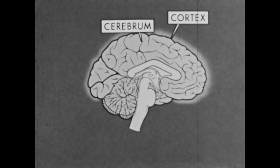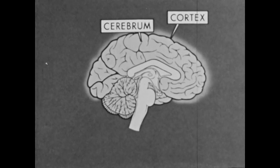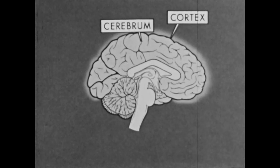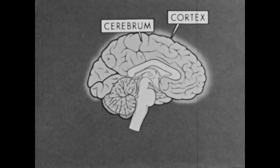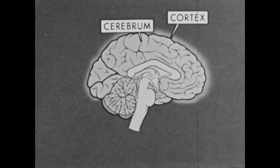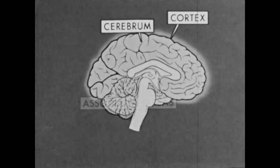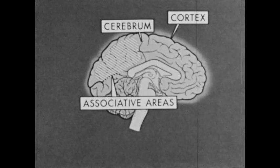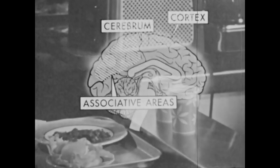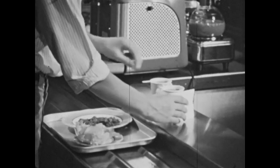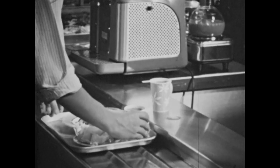This action began in the cortex and cerebrum — that portion of the brain which enables you to perform many activities, among which the most important is thinking and understanding. How the cortex of the brain thinks and understands is a mystery that has yet to be solved. We do know, however, that neurons in certain areas of the cortex, called associative areas, store a vast number of stimuli impulses. These areas of the cortex enable you to associate a steaming cup with the feeling of hot, and further enable you to think of ways to avoid the painful hot stimulus.